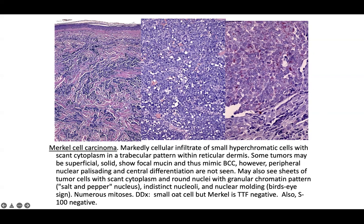The cells are small but very hyperchromatic with scant cytoplasm — the nuclei are what stand out. You can see speckled chromatin. If you perform CK20 staining, it shows a perinuclear dot pattern. Merkel cell carcinomas are CK20 positive in most cases, though there are rare exceptions with aberrant dedifferentiation. For test-taking purposes, CK20 is your money stain.